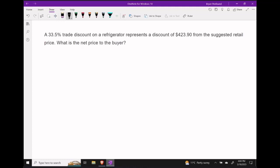In this video let's solve the following word problem involving trade discounts. Here we have that a 33.5% trade discount on a fridge actually is a discount in dollars of $423.90 from our suggested retail price. Our goal here is to determine the net price to the buyer.